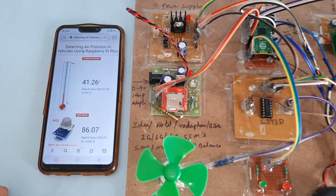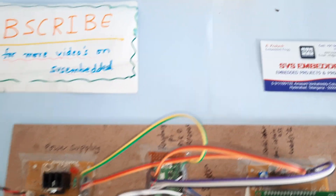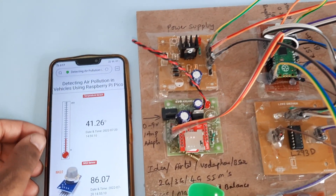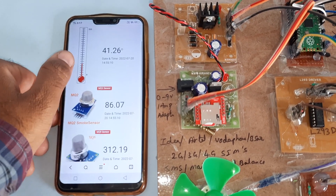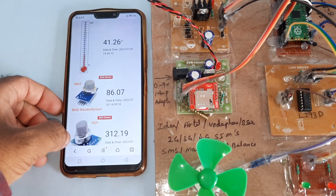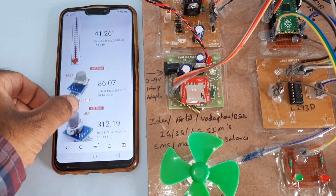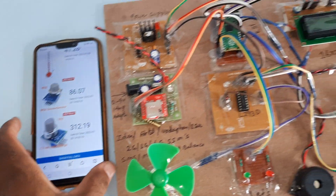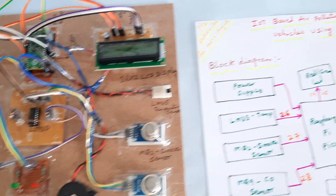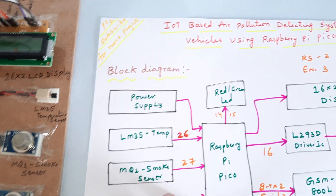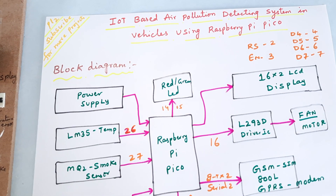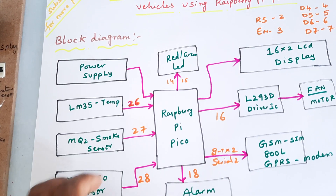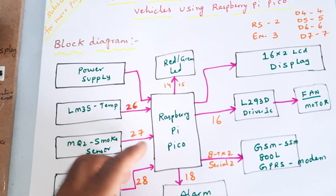Hi, we are from SVS Embedded. The project title is detecting air pollution in vehicles using Raspberry Pi Pico. We are using a temperature sensor, MQ2 smoke sensor, and MQ9 carbon monoxide sensor. This is an IoT-based air pollution detecting system in vehicles using the Raspberry Pi Pico board.